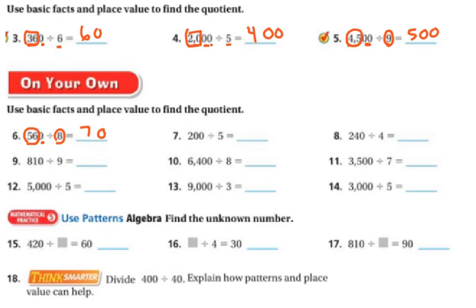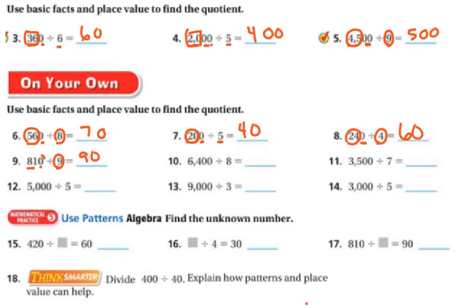I'm going to do a few more. My basic facts are 5 and 20: 5 times 4 is 20, with one zero, so one zero in the answer. Over here, 4 and 24: 4 goes into 24 six times, with one zero in the answer. Next, basic facts are 9 and 81: 9 times 9 is 81, with one zero left over. Finally, 8 and 64 are my basic facts with two zeros, so two zeros in the answer — 8 times 8 is 64, so the answer is 800.